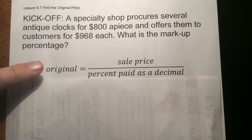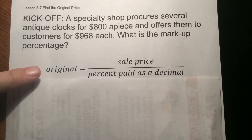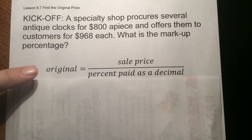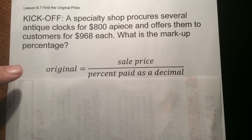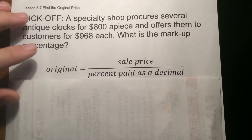So how we do that is with this right here. We're going to take the sales price and divide that by whatever our percent is, but we're going to change it to a decimal first. And that will give us what our original price was.